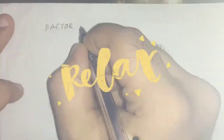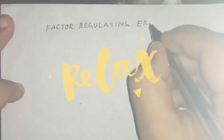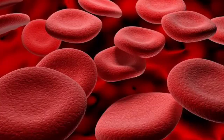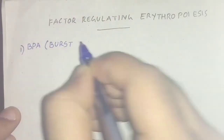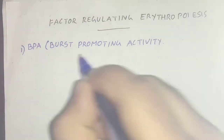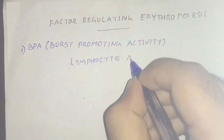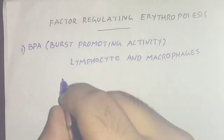Hello guys, welcome back to YouTube channel PD Bros, this is Debra on the topic of factors regulating erythropoiesis. The first factor is BPA, the hemopoietic growth factor, also known as burst promoting activity.